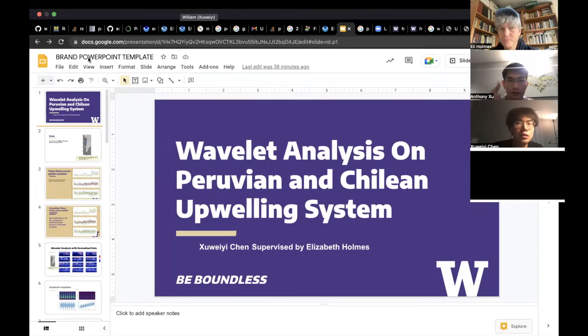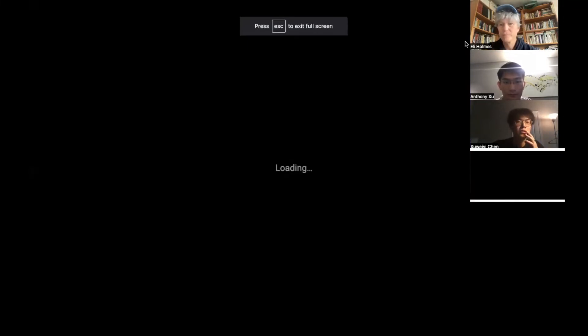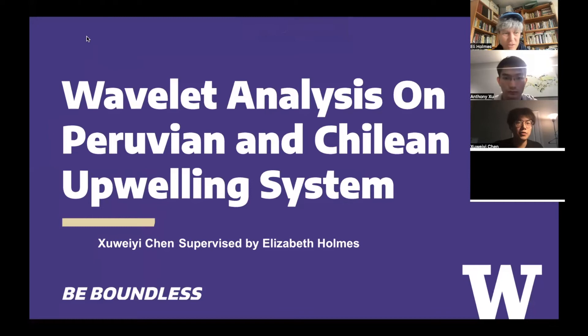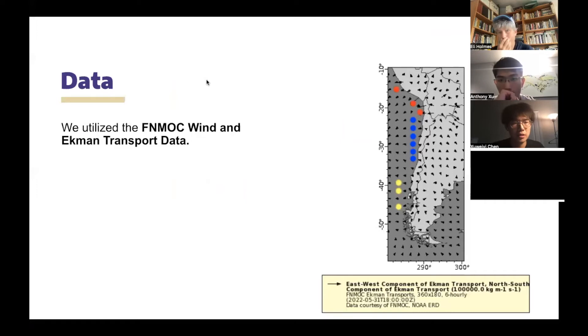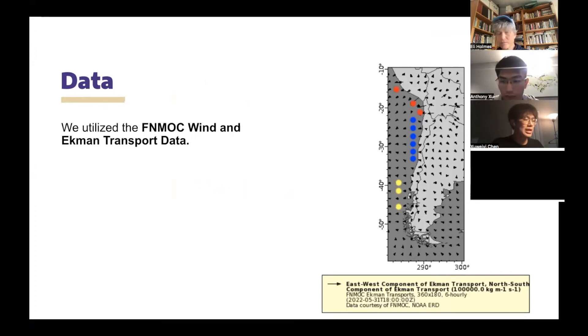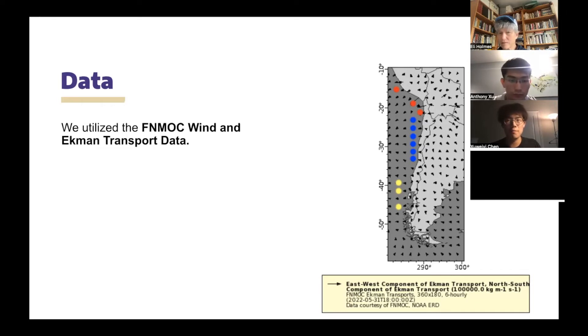Great, thanks Anthony. So William, why don't you go next. I'm William, and here is the presentation for the wavelet analysis on the Peruvian and Trilivian upwelling system. Here are our data points — the Ekman transport data, which is wind-driven. We have three different regions: the first region is the red points within the range of 15° to 24° south; the second region is between 24° to 36° south, the blue points; and the third group is the yellow points below 36° south. We observed that each region has different spatial variation across time for the upwelling.